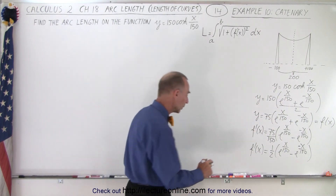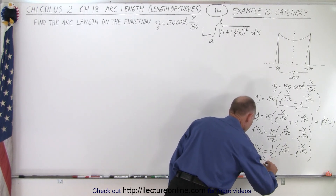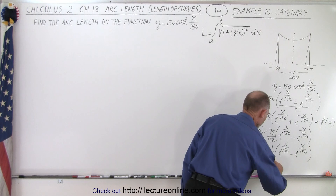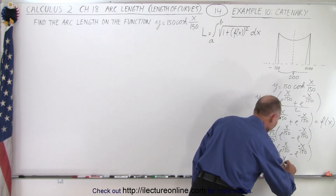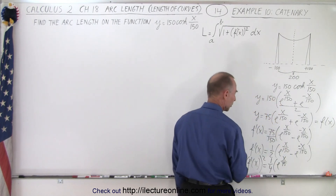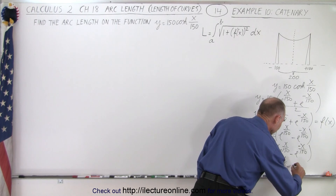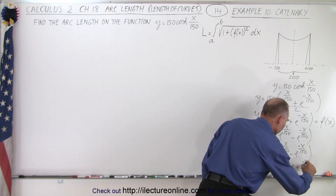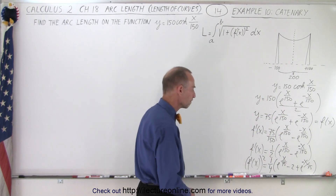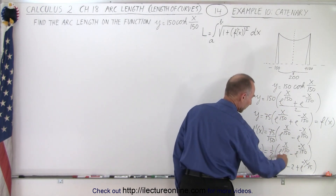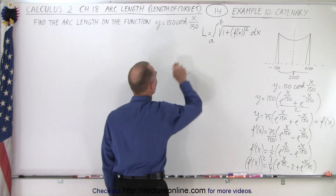When we square the derivative, we get f prime of x squared equals one quarter times the quantity e to the x over 75 minus 2 plus e to the minus x over 75. Now we're ready to plug that into our arc length equation.